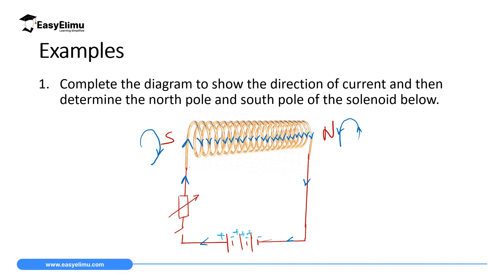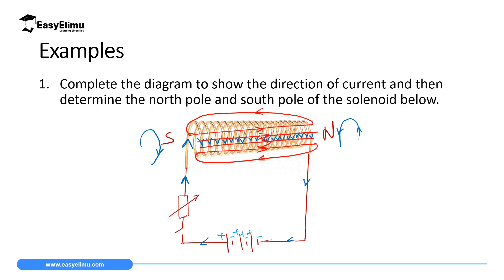If you are asked to draw the magnetic field lines: inside the solenoid the field lines move from left to right. Outside, they join from the north pole to the south pole, forming a complete loop. At the south pole the field lines come in, and at the north pole they move out.